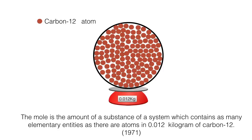You may wonder how many atoms this 0.012 kg of carbon-12 would have. Yes, it has exactly the same amount as Avogadro's number: 6.022 × 10²³.